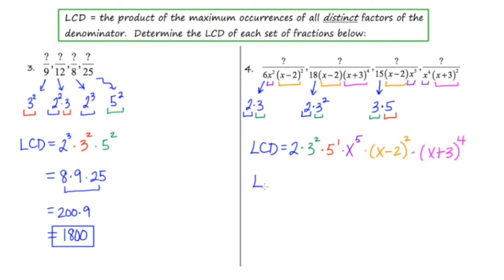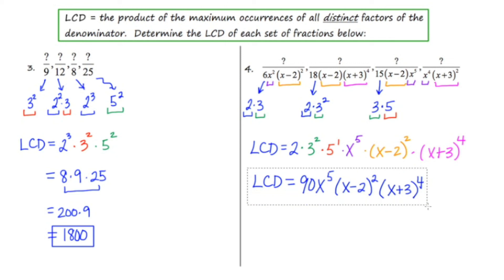So this is our LCD — it's a long one. The numerical part: 2 × 9 = 18, and 18 × 5 = 90. Combined with the algebraic parts, the LCD is 90x⁵(x minus two)²(x plus three)⁴. I hope after watching this short video you now have an idea of what it takes to find the LCD when adding or subtracting rational expressions.